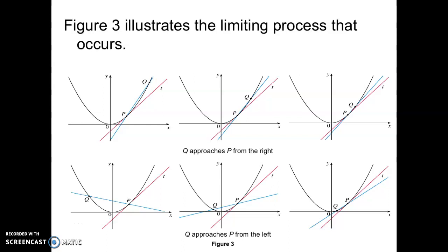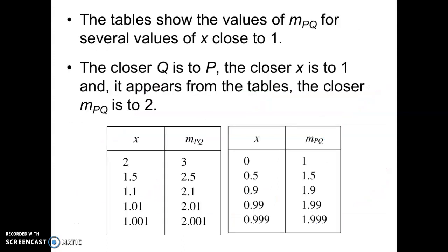Hello, this is MAT221, Mrs. Johnson. This is section 2.1, having to do with tangent lines to the curve and limits. So this is video 2. This table shows the values of the slope of the secant line from P to Q for several values close to X equals 1.